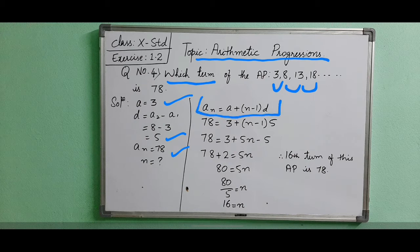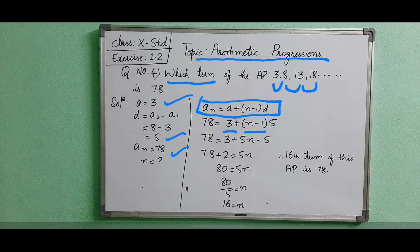Substituting now, an is 78, a is 3, n minus 1 as it is, and d is 5. So 78 equals 3 plus n minus 1 into 5, which is 3 plus 5n minus 5.